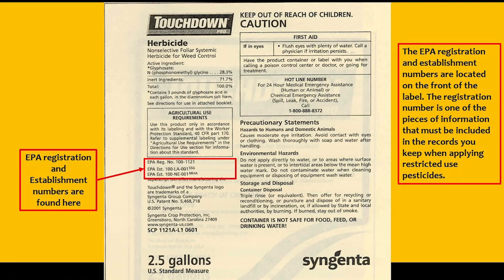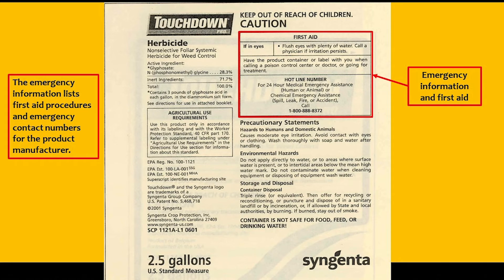The registration number is one of the pieces of information that must be included in the records you keep when applying restricted use pesticides. Emergency information and first aid procedures, along with emergency contact numbers for the product manufacturer, will also be found on the label.